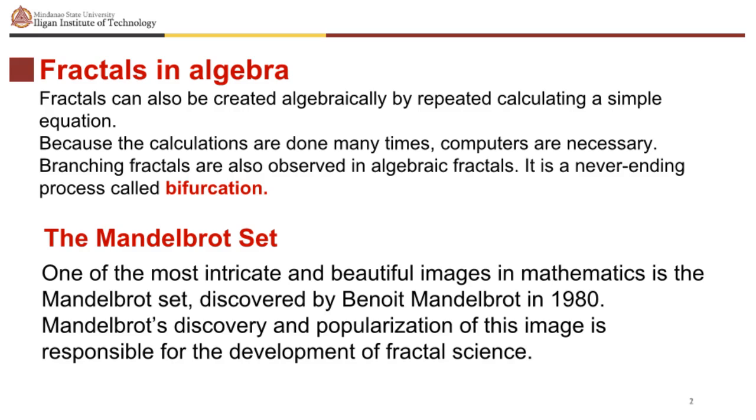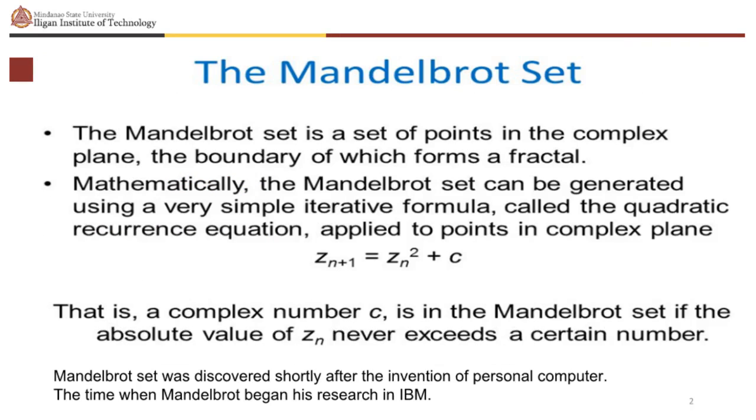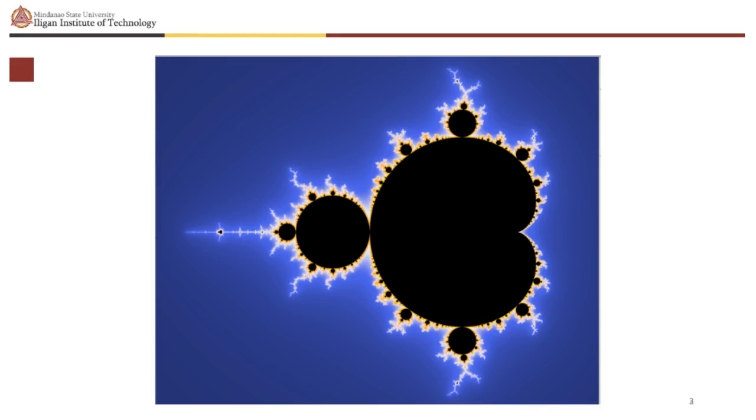The Mandelbrot set. One of the most intricate and beautiful images in mathematics is the Mandelbrot set, discovered by Benoit Mandelbrot in 1980. Mandelbrot's discovery and popularization of this image is responsible for the development of fractal science. The Mandelbrot set is a set of points in the complex plane, the boundary of which forms a fractal. Mathematically, the Mandelbrot set can be generated using a very simple iterative formula, called the quadratic recurrence equation, applied to points in complex plane: z sub n plus 1 equals z sub n squared plus c. That is, a complex number c is in the Mandelbrot set if the absolute value of z sub n never exceeds a certain number. This is called the Mandelbrot set and is an example of a fractal shape.